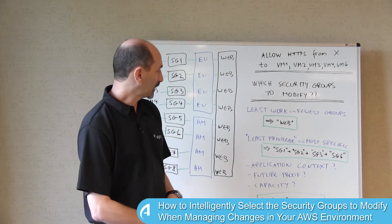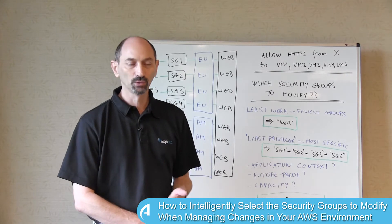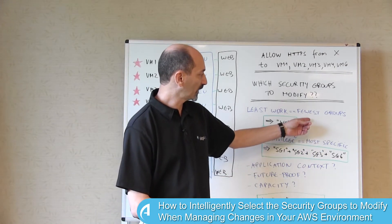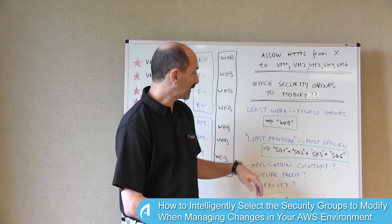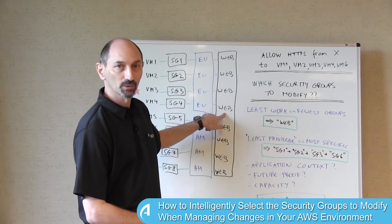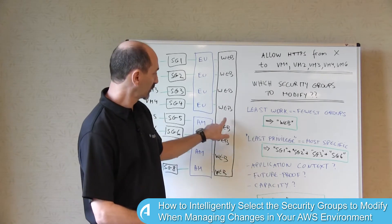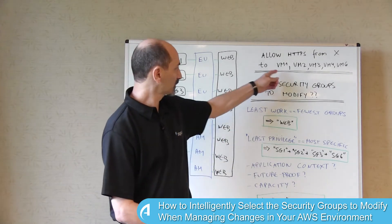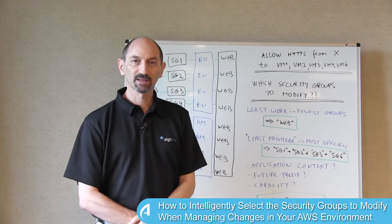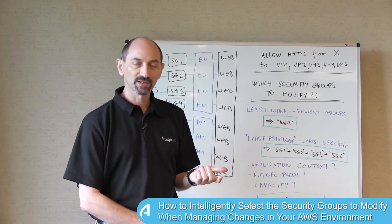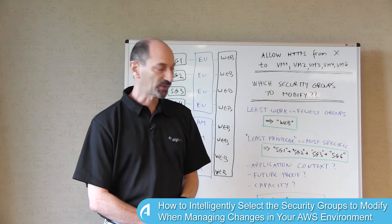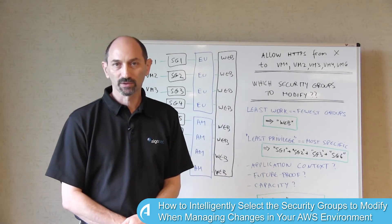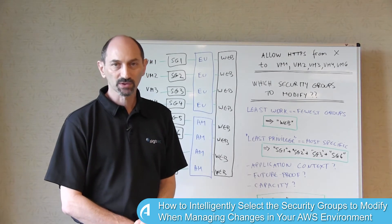The first thing you could do is try to minimize your own work — just do the least amount of work manually. To do that, you'd want to modify the smallest number of security groups that get the job done. In this example, you could put this rule in the web security group, making one rule change in one security group. This is enough because the web security group is associated with all the VMs you care about: numbers 1 to 4 and number 6. The downside is that you have a lot of side effects — you're actually allowing this traffic also to go to VMs 5, 7, and 8, which were not part of the original request.